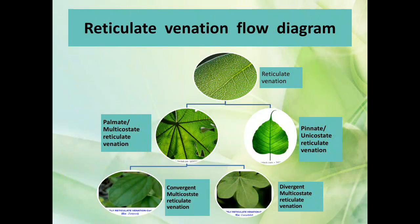Reticulate venation flow diagram: you can observe here the flow diagram showing reticulate venation divided into pinnate unicostate reticulate venation and palmate or multicostate reticulate venation, which are further divided into divergent and convergent types.